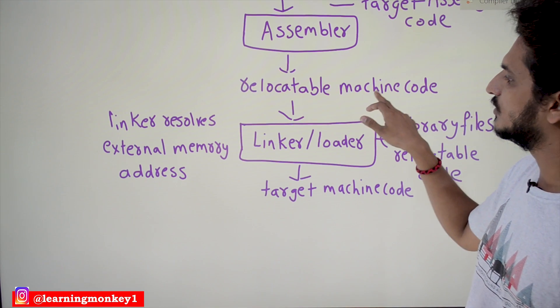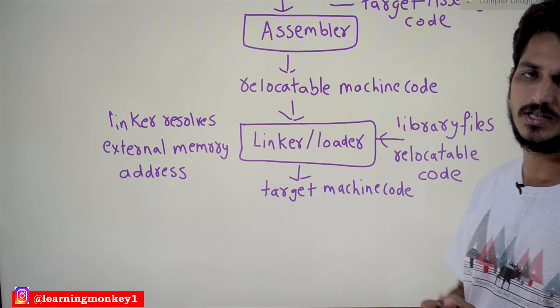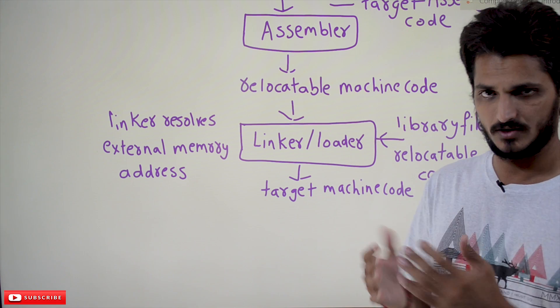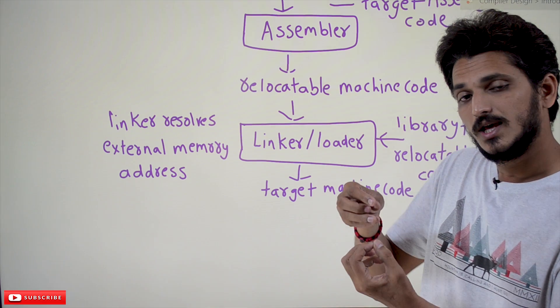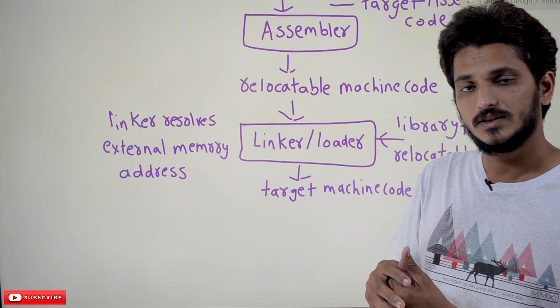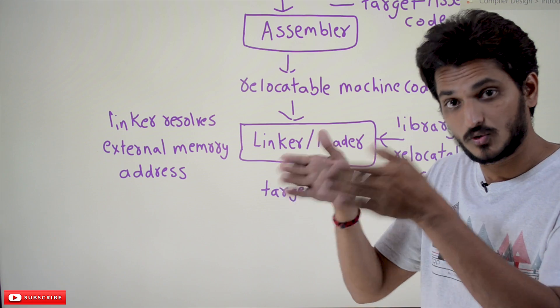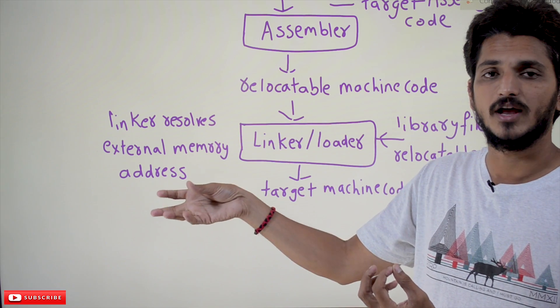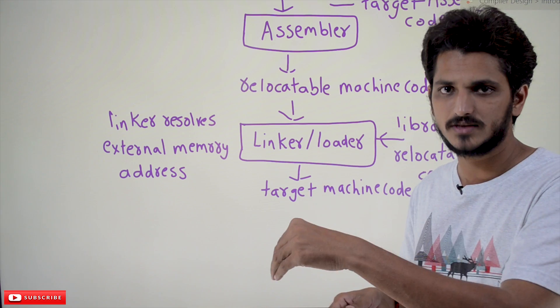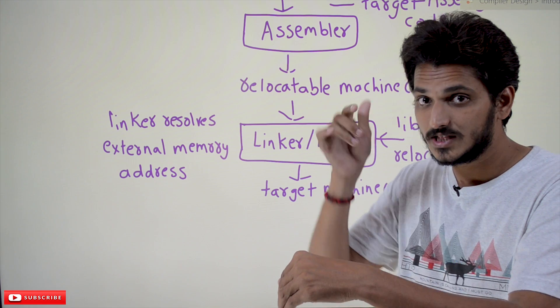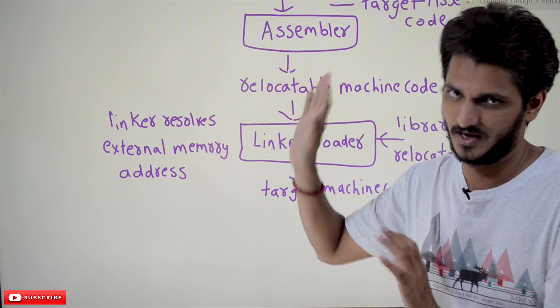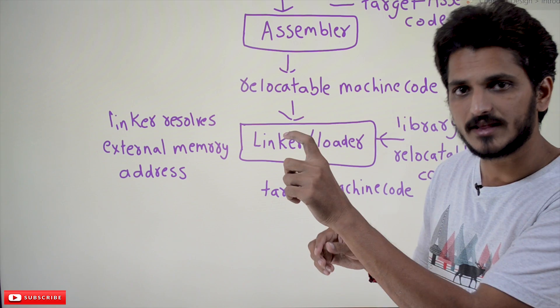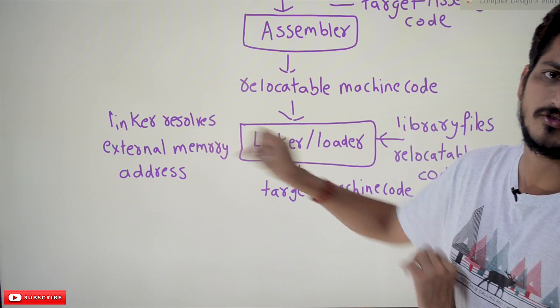This relocatable machine code is given to the next step - linking and loader. What's the goal of this linking software? Suppose in this relocatable machine code, whatever code we have written - if we are using code from some other package that is present in another file, that code is not present in this file. Where is that file? How to get that file? Where to place that file in random access memory? This intuition was provided in the last class. Where to place in the random access memory? If it is placed in some location, what's that address? That address is going to be determined by this linking software and given to the loader.